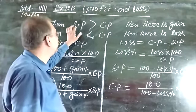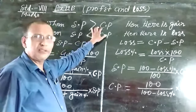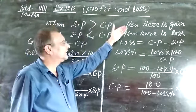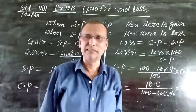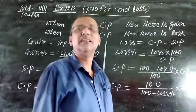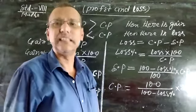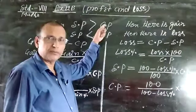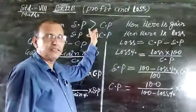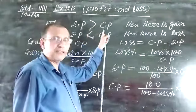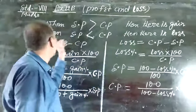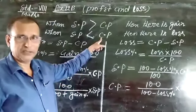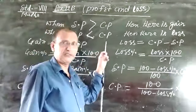SP is for selling price and CP is for cost price. When selling price is greater than the cost price, then there is gain.